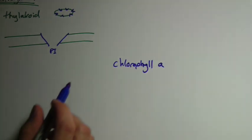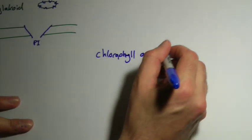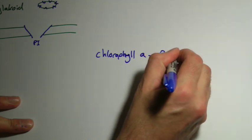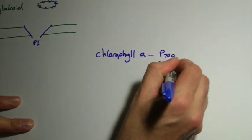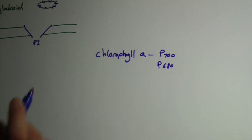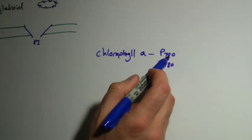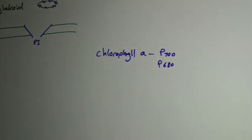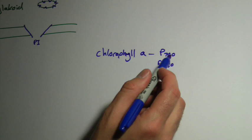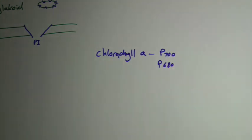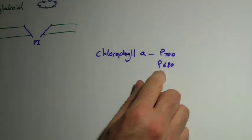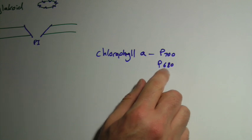And there are two forms of chlorophyll A. There is the P700 form and the P680 form. What's the difference? Well, this number is simply referring to the wavelength of light that is best at absorbing. So chlorophyll A absorbs light best at 700 nanometers and chlorophyll B absorbs it best at 680.